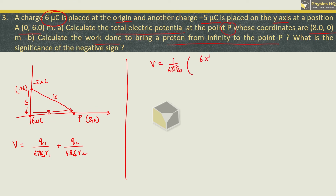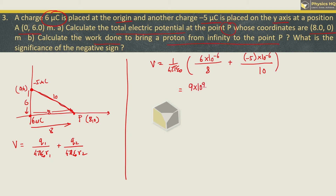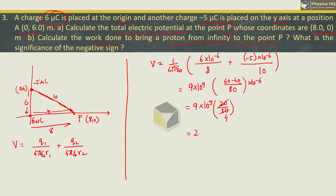Q1 is 6 micro coulomb, so 6 into 10 raised to minus 6 divided by 8, plus Q2 which is minus 5 micro coulomb, divided by 10 — since point P's distance from the second charge is 10. Substituting 1 upon 4 pi epsilon naught as 9 into 10 raised to 9, we can cross multiply to get 60 minus 40 divided by 80, into 10 raised to minus 6. This gives 9 into 10 raised to 3 times 20 over 80, leaving us with 2.25 into 10 raised to 3 volt.